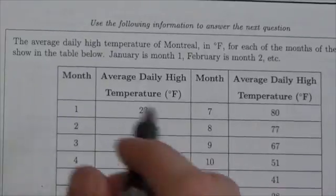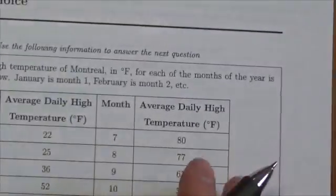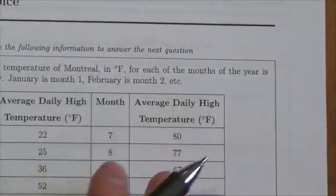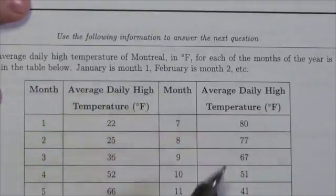Alright, now this question says that the average daily high temperature of Montreal in degrees Fahrenheit for each of the months of the year is shown in the table below, and then January is going to be month one, February month two, and so on.